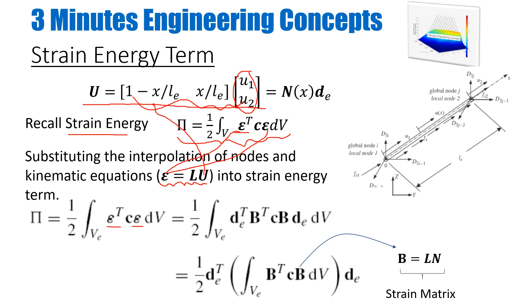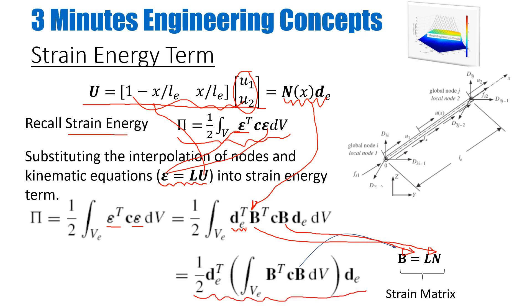When I substitute, I have epsilon transpose times epsilon, and applying the matrix rule that (AB)^T = B^T A^T, I get DE transpose times B. My B matrix is generally given by L times N — because I replaced epsilon by LU and then U with N times DE. So B is my strain matrix, basically the partial derivative of my shape functions. My final relationship for the potential energy is: one half times DE transpose times the integral of B^T C B dV times DE.